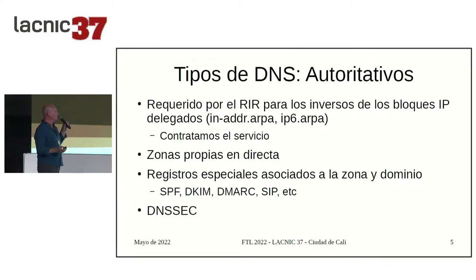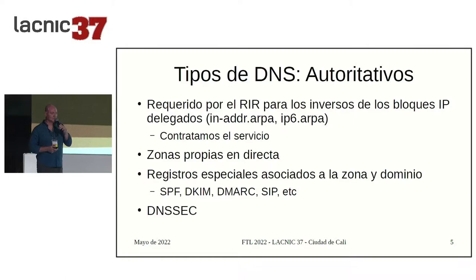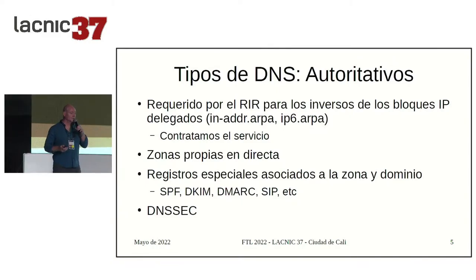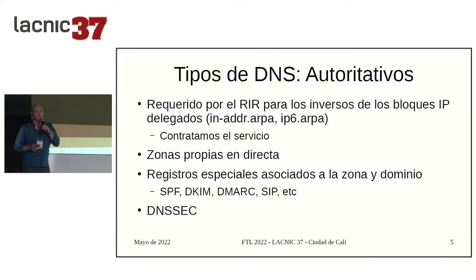In the case of the authoritative DNS, they are used mostly for our own zones that we want to administer in our domain or whatever domains we have. It is also a requirement by the RIRs — when they delegate IPs, we can respond in reverse to those IP addresses. Our own zones are indirect and each zone has associated records. Many also use DNSSEC to sign their zones, which provides security for name resolution — an additional security tier. This is also often hired out, and many who don't have recursive servers don't have authoritative servers either.